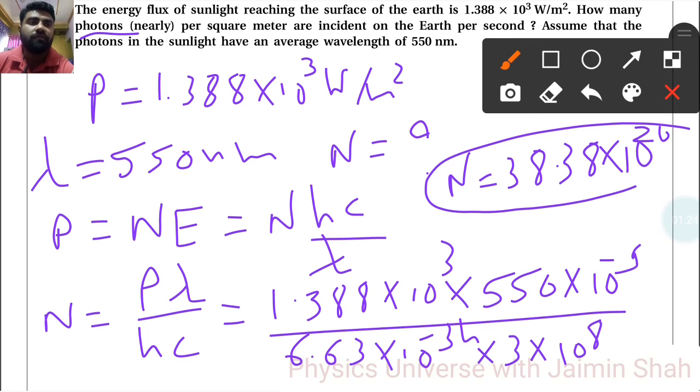So this number of photons per square meter are incident on the earth per second.